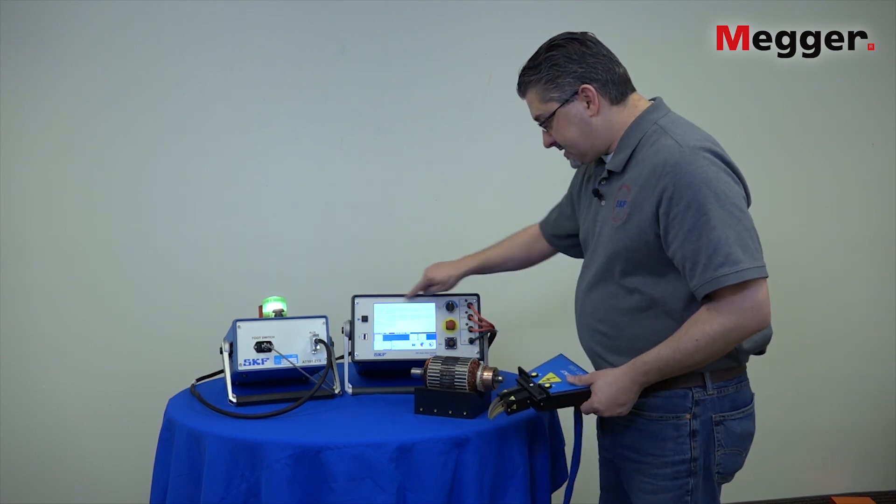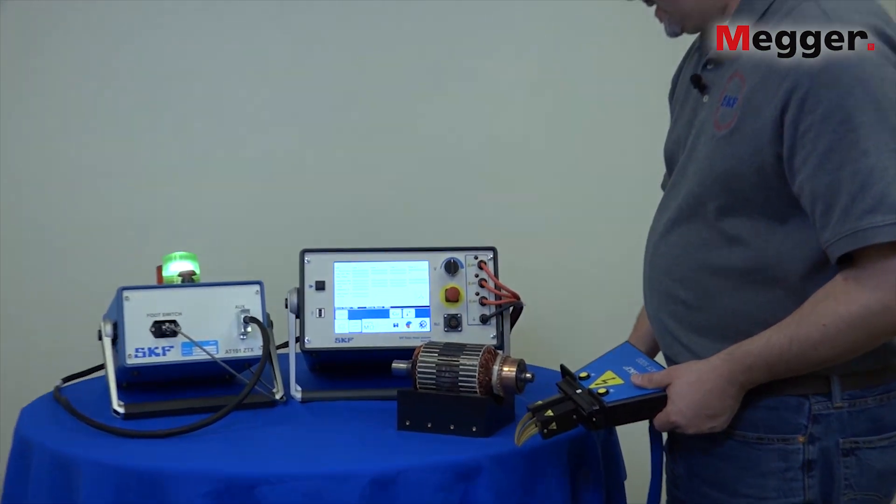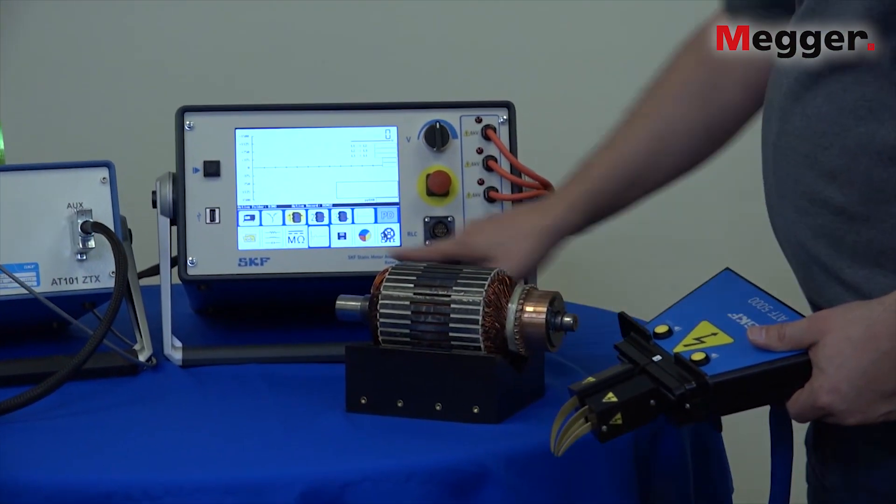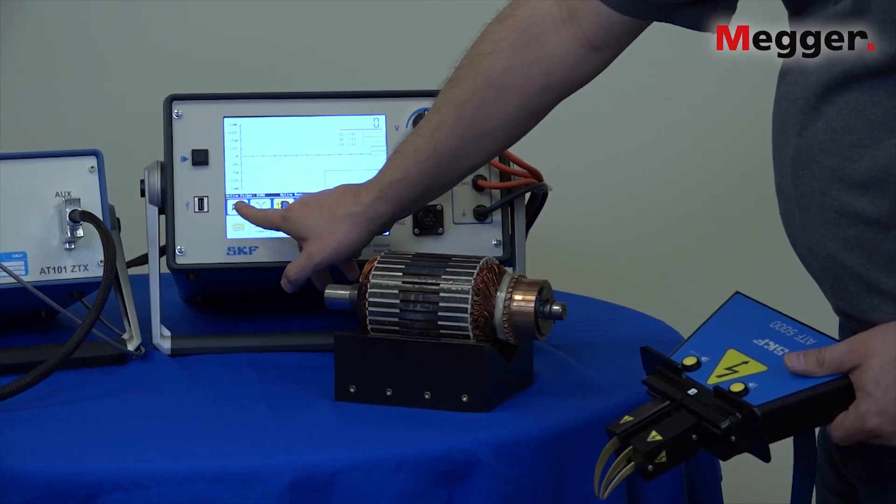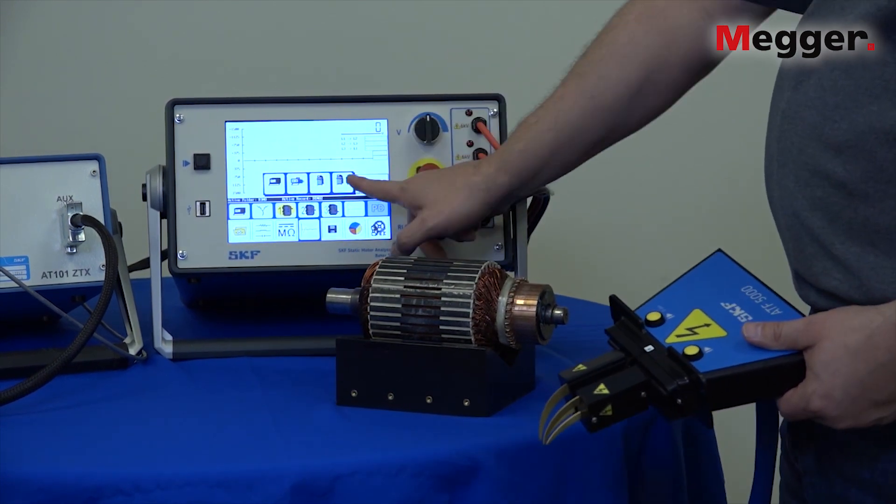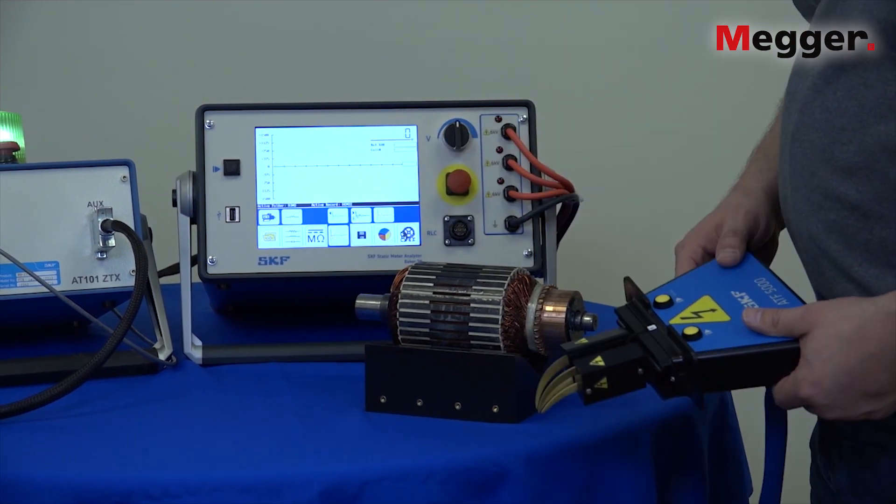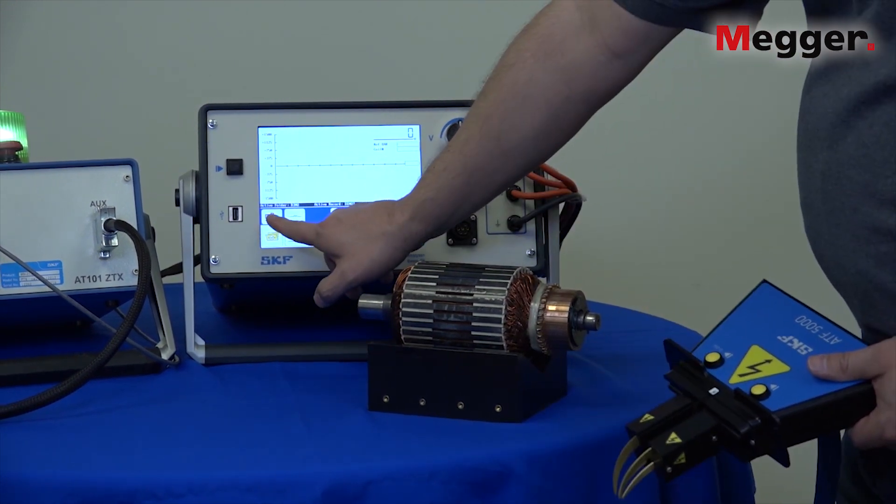On the DX screen we want to select the icon for surge testing, and now under the device we want to make sure we select the ZTX. Again, if you're doing armature testing with the power pack you can select the power pack as your option. We'll select the ZTX and we'll see the icon displayed down here.